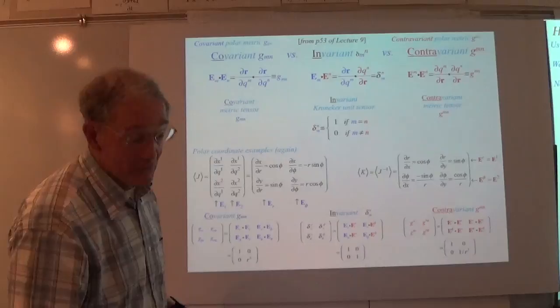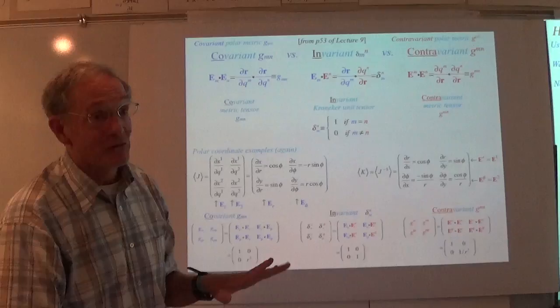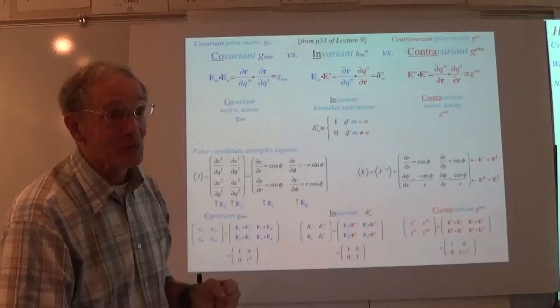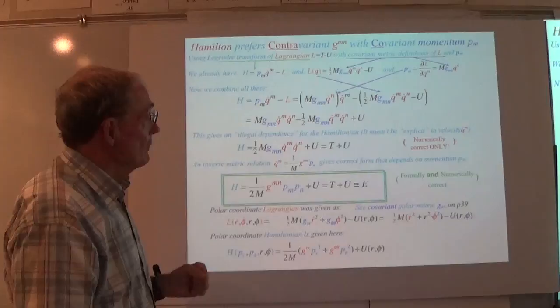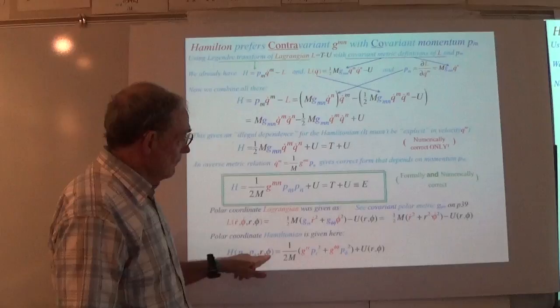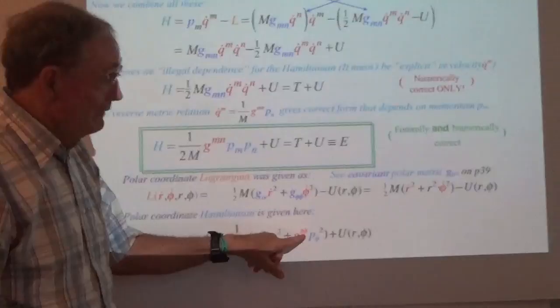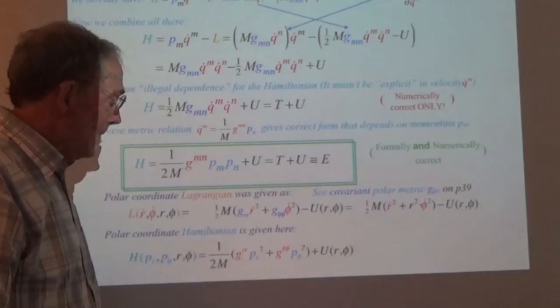This is a standard algebraic approach to getting the Hamiltonian out of a Lagrangian, and the properties that it has are going to fall out pretty closely here. Here's our Hamiltonian we're going to be working with. We'll be using G superscript RR and G superscript phi-phi — the contravariant matrix. This one has to be 1, and that one has to be 1 over R-squared.